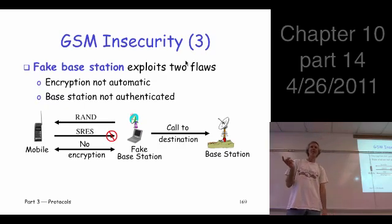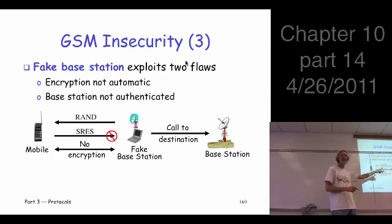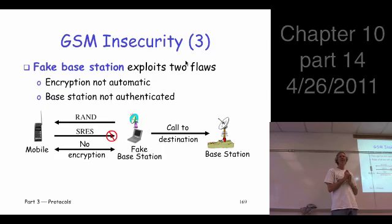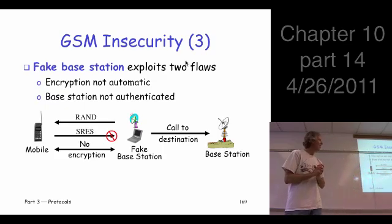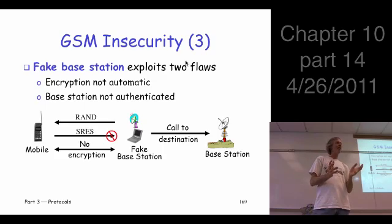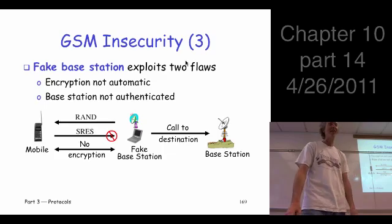Here's a question: in this scenario, you make a call, it actually goes through, you get to talk to who you want to talk to — so who gets the bill? The fake base station gets the bill because it actually placed the call — it's just sitting here like a proxy for you. You could actually detect this if you looked very closely at your bill and saw you were not charged for a call. But nobody's going to complain about not being charged.